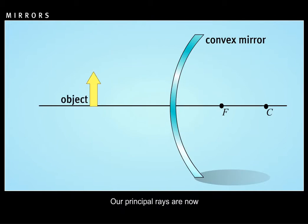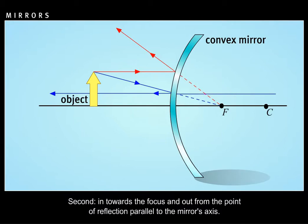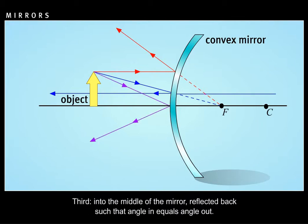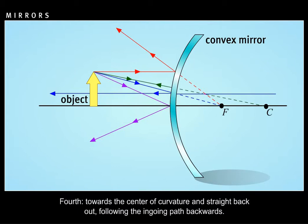The principal rays for a convex mirror are: first, parallel going in and out as if they come from the focus and through the point of reflection; second, in towards the focus and out from the point of reflection parallel to the mirror's axis; third, into the middle of the mirror, reflected back such that angle in equals angle out — both angles measured relative to the axis of the mirror; fourth, towards the center of curvature and straight back out, following the ingoing path backwards.